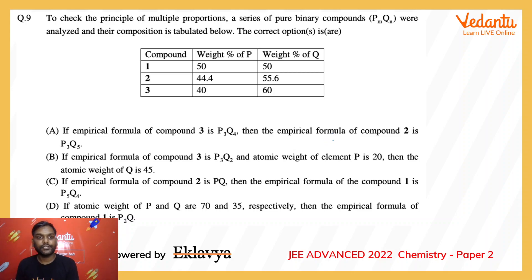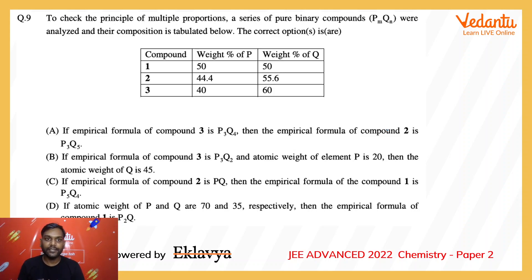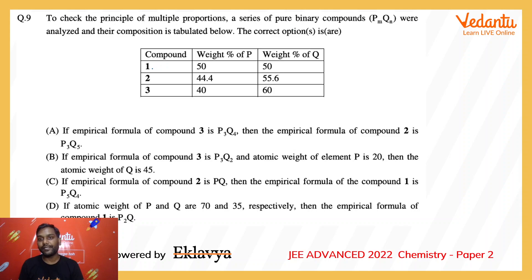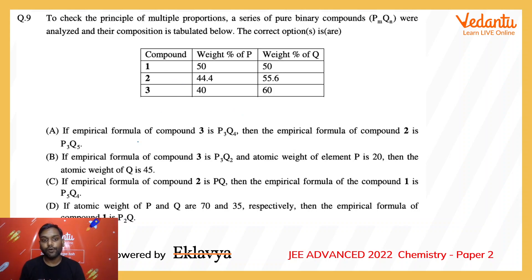Moving on to the second section — multiple correct type. The first question is to check the principle of multiple proportions. A series of pure binary compounds were analyzed and their composition is tabulated below. We have three compounds all containing P and Q, having different weight ratios. We need to find which options are correct for these compounds.